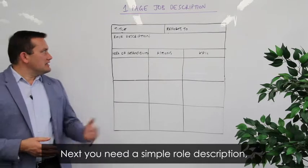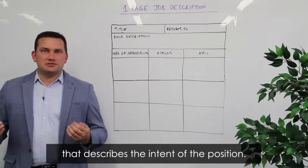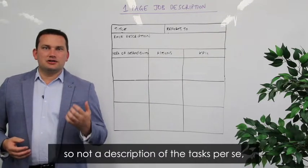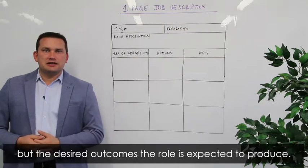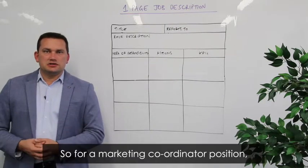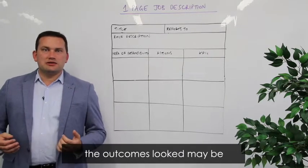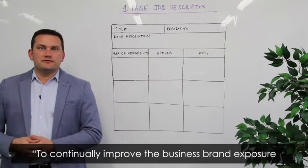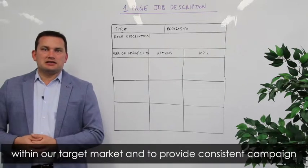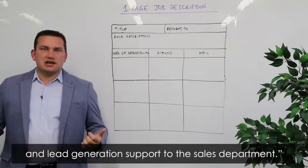Next, you need a simple role description, which should be a basic statement that describes the intent of the position. This should be outcome-based — not a description of the tasks per se, but the desired outcomes the role is expected to produce. For a marketing coordinator position, the outcomes may be to continually improve the business's brand exposure within the target market and to provide consistent campaign and lead gen support to the sales department.